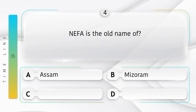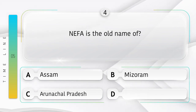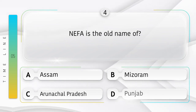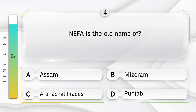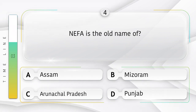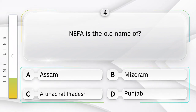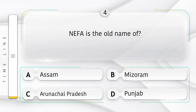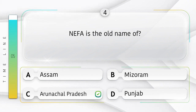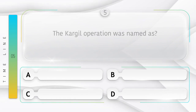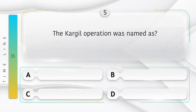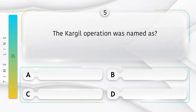NEFA is the old name of: option A: Assam, B: Mizoram, C: Arunachal Pradesh, D: Punjab. Answer is option C, Arunachal Pradesh.